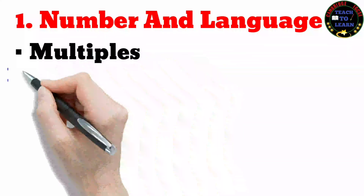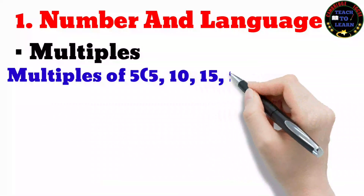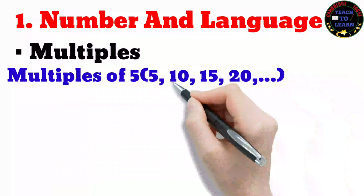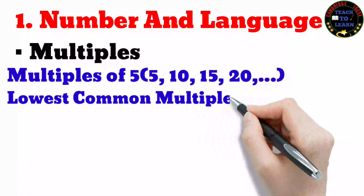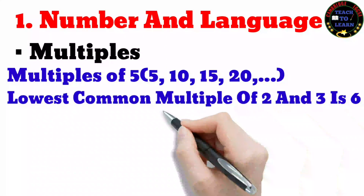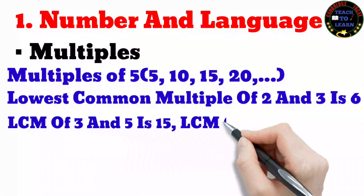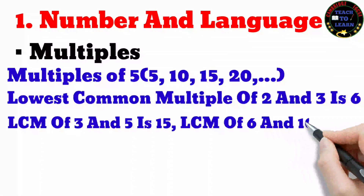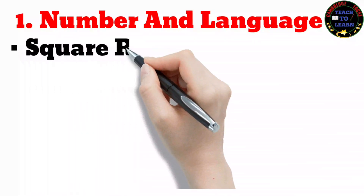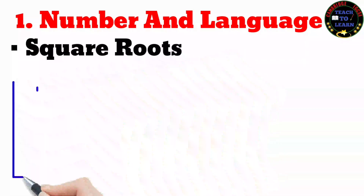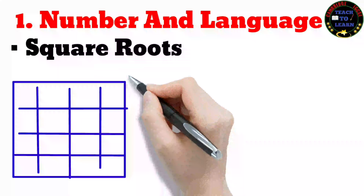Multiples of 5 are 5, 10, 15, 20, etc. The lowest common multiple (LCM) of 2 and 3 is 6, since 6 is the smallest number divisible by both 2 and 3. The LCM of 3 and 5 is 15, and the LCM of 6 and 10 is 30. Square roots: the square shown contains 16 squares and has sides of length 4 units, so the square root of 16 is 4.